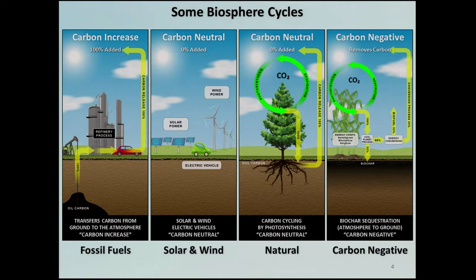Then we go to biomass — trees, plants, and annuals in particular die every year and dump all their carbon back into the atmosphere. Trees have respiration: they emit carbon dioxide at night and in the wintertime. Branches and leaves fall off, and of course when they die, all that carbon goes back in the air. So biomass is not really sequestering carbon long term.